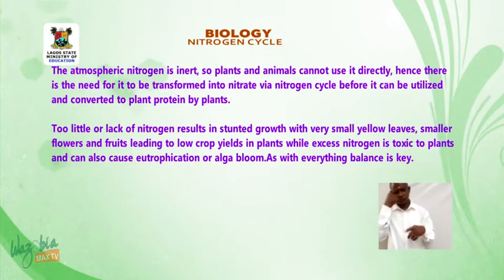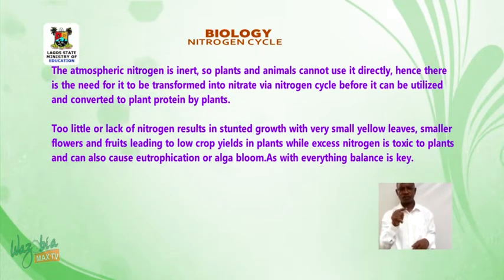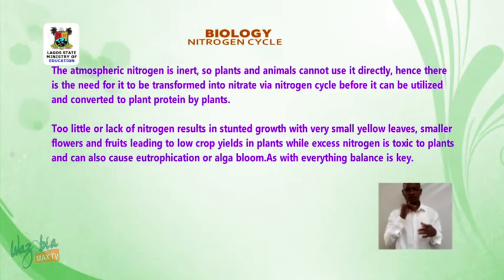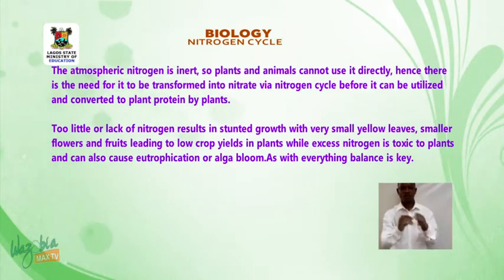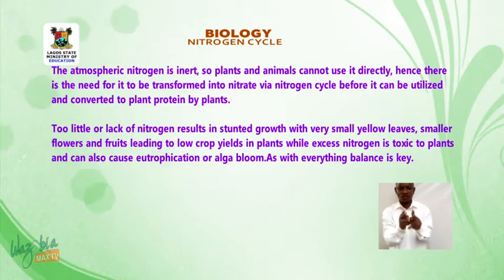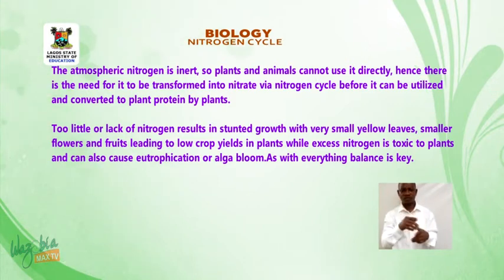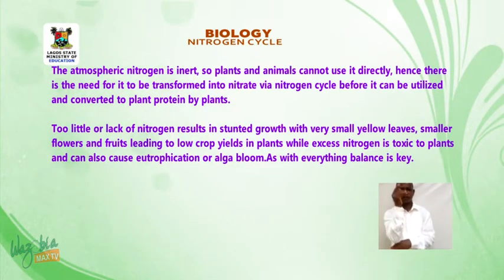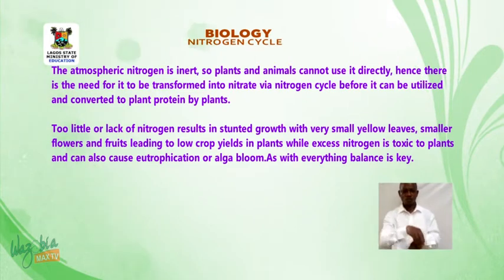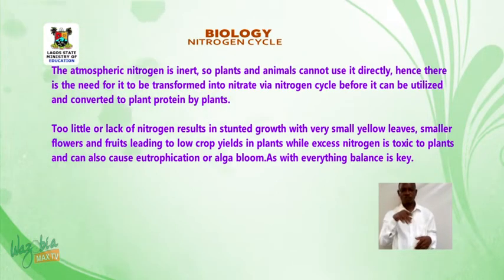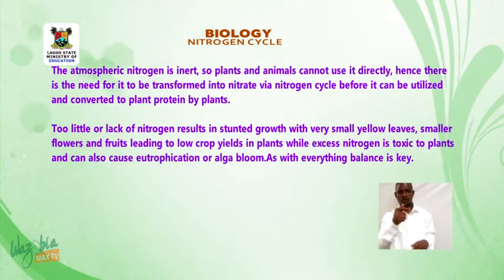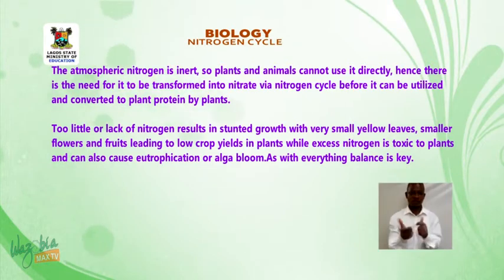Hence, there is need for it to be transformed into nitrate via the nitrogen cycle, before it can be utilized and converted to plant protein by plants. Too little or lack of nitrogen results in stunted growth with very small yellow leaves, smaller flowers and fruits, leading to low crop yields in plants. While excess nitrogen is toxic to plants and can also cause eutrophication or algal bloom. As with everything, balance is key.